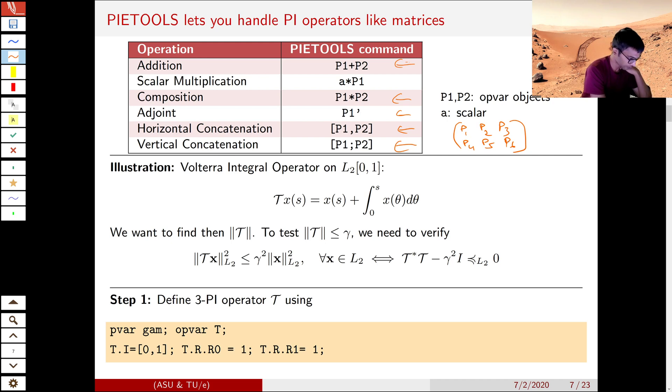Let's look at an example. Volterra Integral Operator is a simple example of a 3-PI operator with just R0 term and R1 term. We want to find the norm of this operator. In other words, we want to solve this optimization problem that can be reformulated as an operator valued